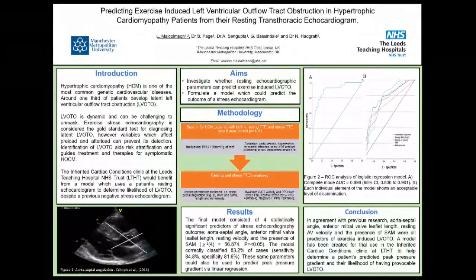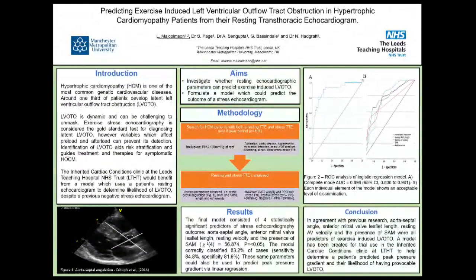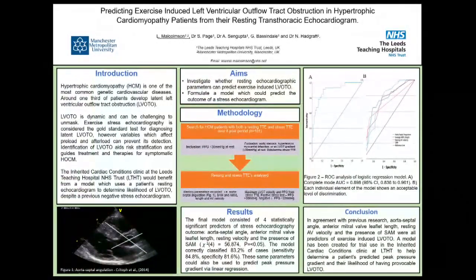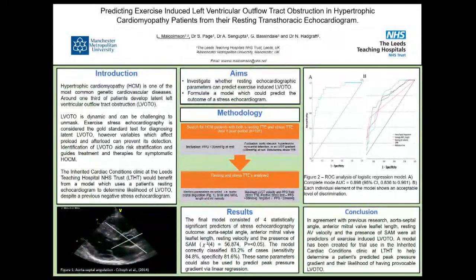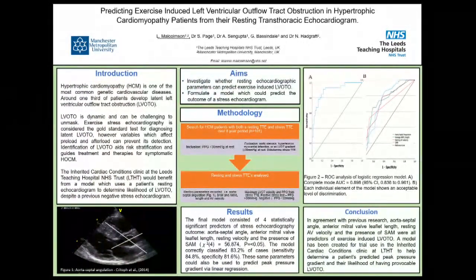Each individual measurement was sensitive and specific, but combined into a model, sensitivity and specificity reached approximately 80%. A model was developed into which resting parameters can be entered to give a probability of exercise-induced LVOT obstruction. The aim is to use this within an ICC clinic for patients where obstruction cannot be unmasked. Limitations include the need to assess intra- and interoperator variability before clinical implementation. The model is not intended to replace stress echo but to complement it — particularly useful for triaging patients given post-COVID echocardiography waiting lists.